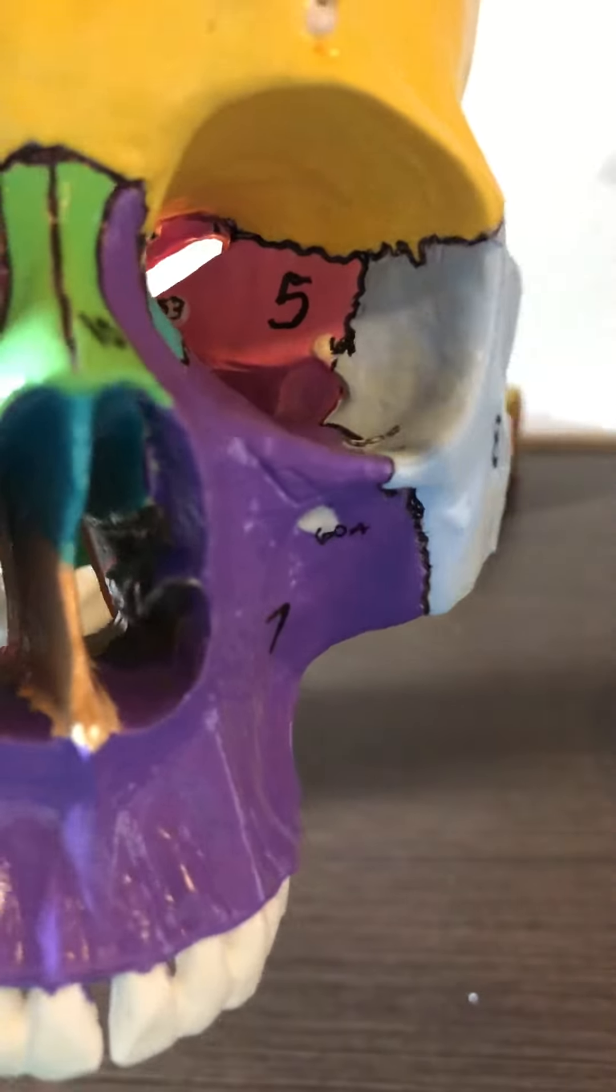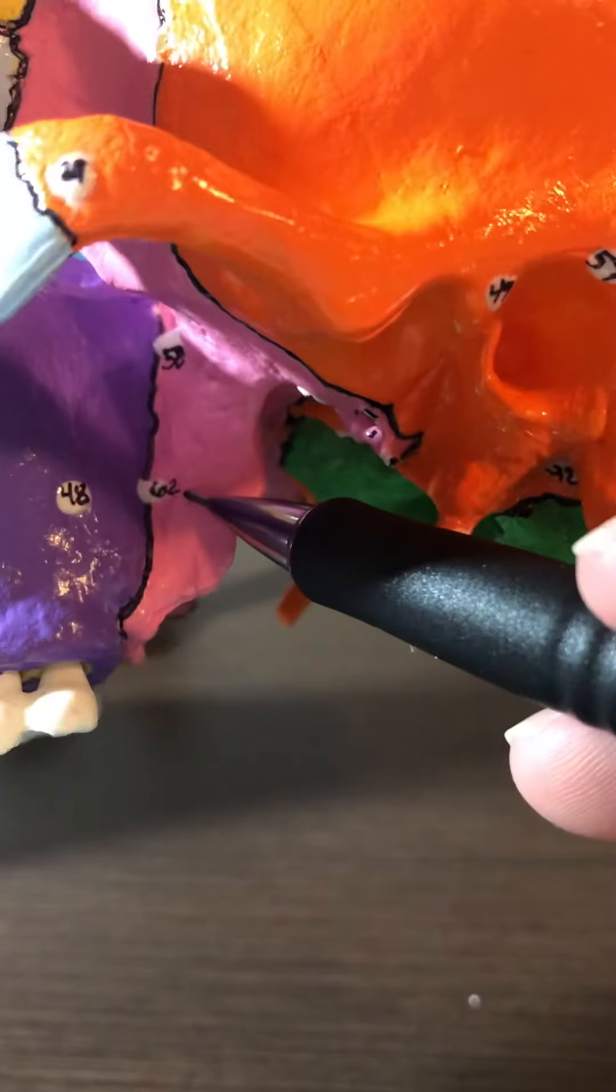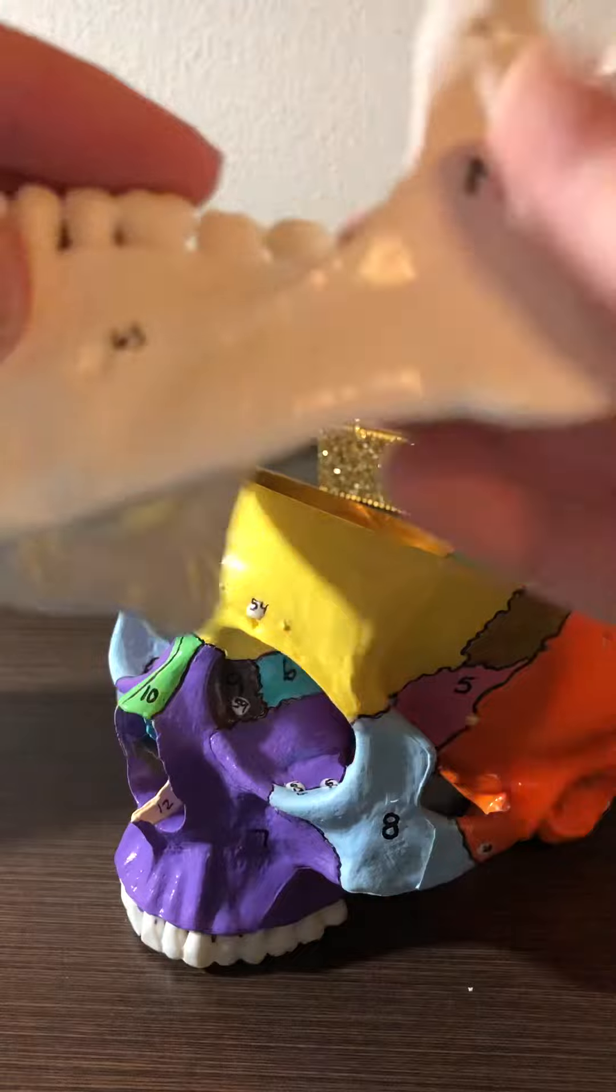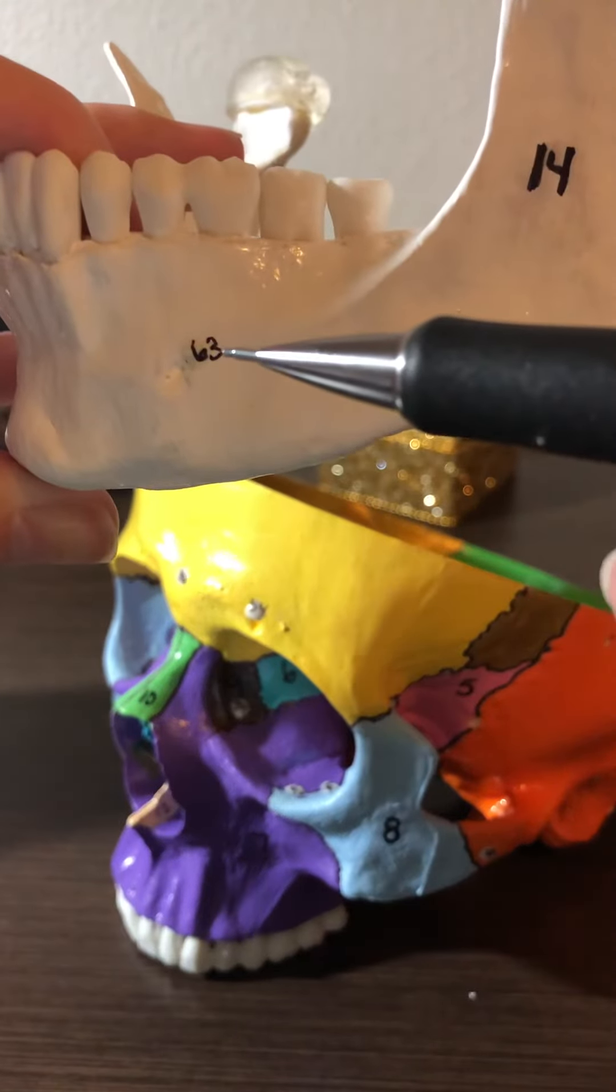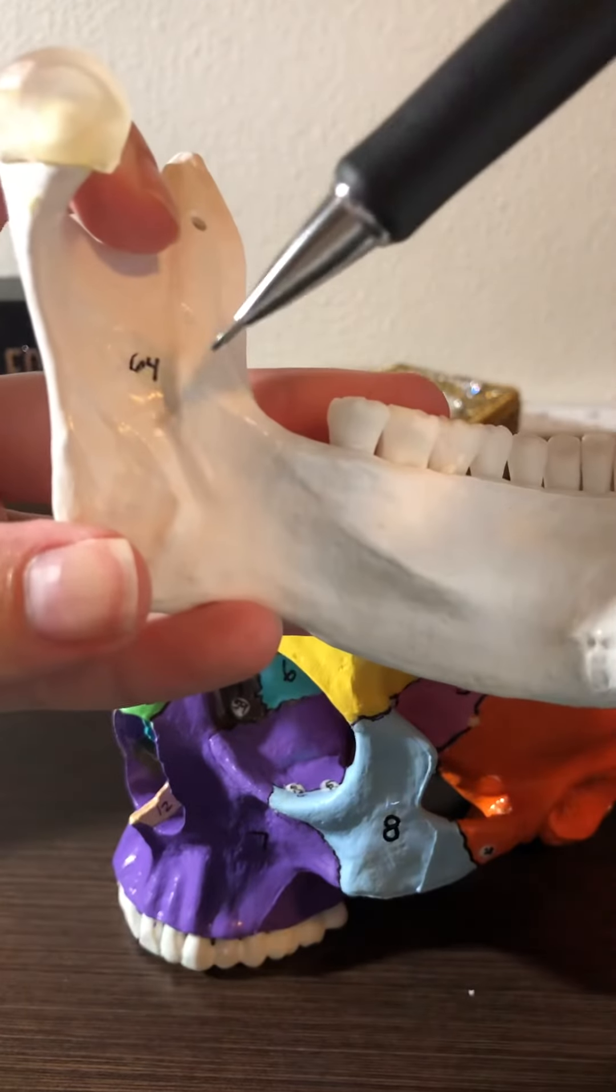Number 62 is the pterygomaxillary fissure. Number 63 is the mental foramen. And number 64 is the mandibular foramen.